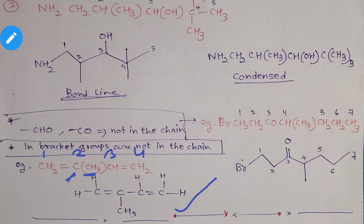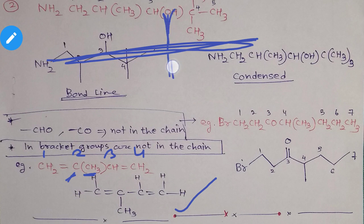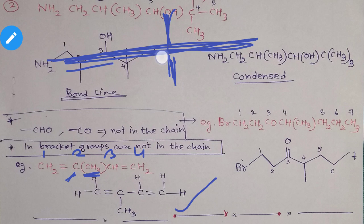Substituent — you will read about it right now. Any groups in brackets, you have to understand they belong to a specific carbon number as sub-branches. These things written in the bracket are not present in the main chain; they are present either above or below. So when I mark, I will not mark this carbon as 3 — I skip it because it is not in the chain. So: one, two, three, four.